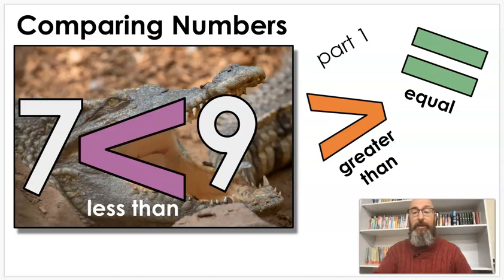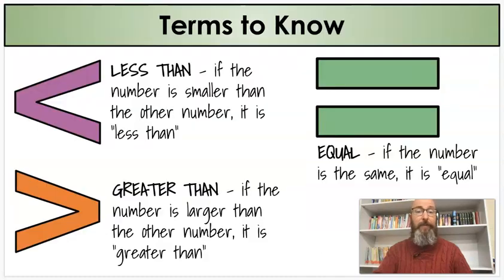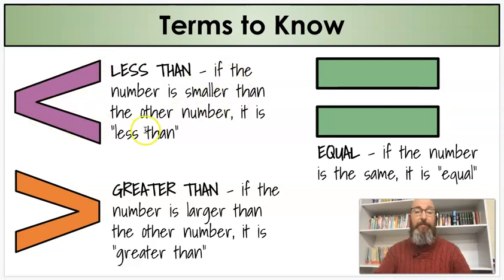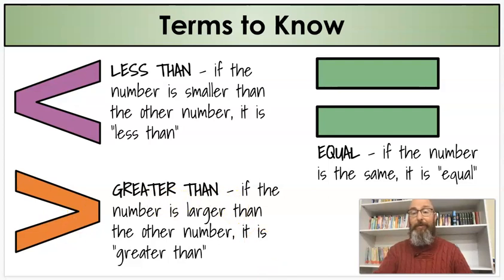And we're going to look and see what those are. But first, what do those words mean? Well, let's figure it out together. When you see this symbol, it means less than. If the number is smaller than the other number, it is less than. The next symbol is greater than. If the number is larger than the other number, it is greater than.